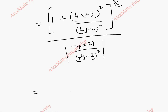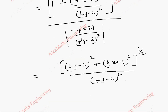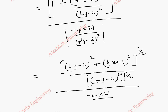Again, in the numerator we are going to take LCM. The LCM is (4y minus 2) whole squared, so we get (4y minus 2)² plus (4x plus 5)², raised to the power 3/2. We separate numerator and denominator. Then whole division by minus 4 times 21, divided by (4y minus 2) whole cube. We can cancel the powers of (4y minus 2) in numerator and denominator.